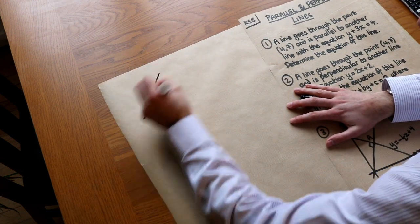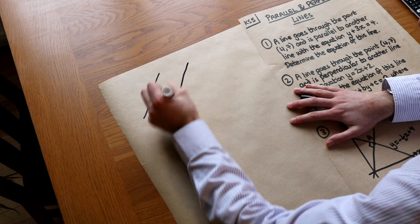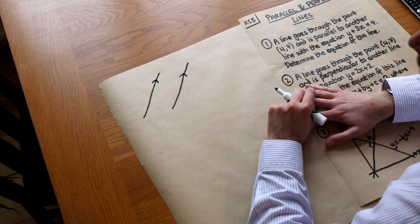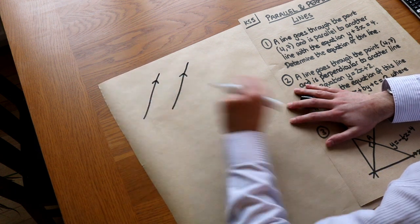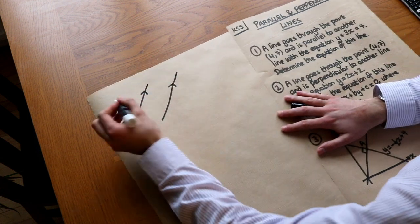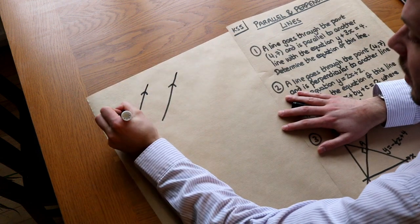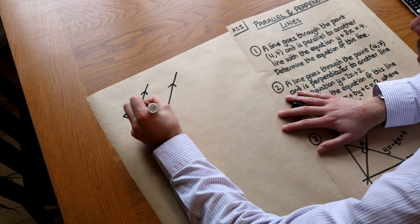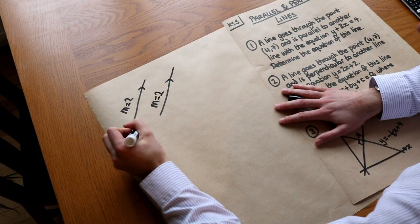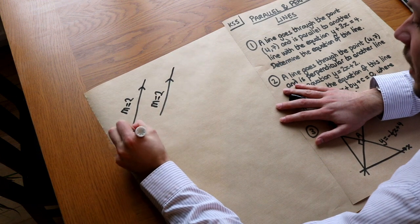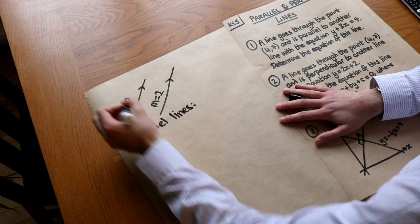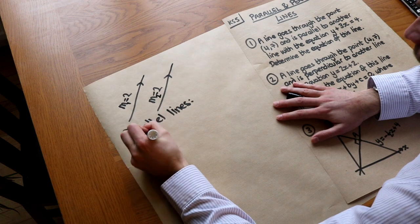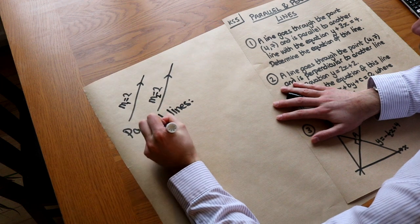If you have two lines which are parallel, in terms of straight line equations, what property do they share? Well, they have the same gradient. So if this gradient, for example, was two, then that gradient would also be two. So for parallel lines, the two gradients — let's call those m1 and m2 — the two gradients will be equal.